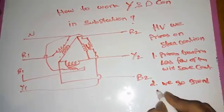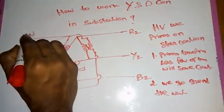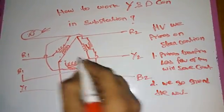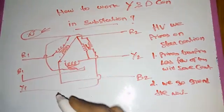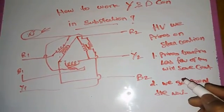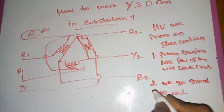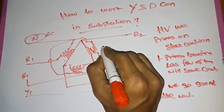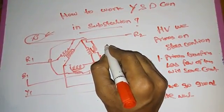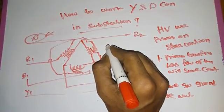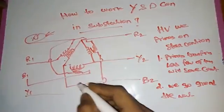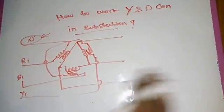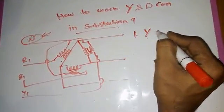The second point is that the neutral is also available in the primary star connection, and we ground this neutral. In HV transmission substations using star-delta, a large number of unbalanced currents also remain stable. Additionally, the star-delta connection has no third harmonic issue on the primary side.